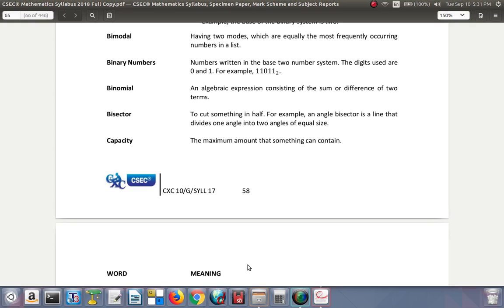Binomial: an algebraic expression consisting of the sum or difference of two terms, like x + y, x - y, x + 3, or x - 1. Bisector: to cut something in half. For example, an angle bisector divides one angle into two angles of equal size. If you bisect a 60 degree angle, you get 30 degrees on each side.